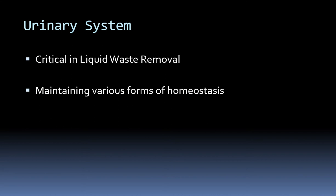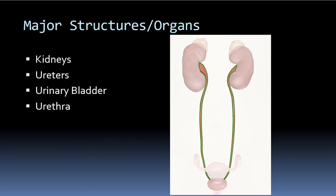The urinary system is very critical in liquid waste removal, where the digestive system handles solid waste leaving the large intestine. The urinary system helps with liquid waste and is also important for maintaining various forms of homeostasis — the proper conditions of the body, such as the proper amount of sodium ions in the bloodstream. The major structures and organs of the urinary system are the kidneys, the ureters, the urinary bladder, and the urethra.